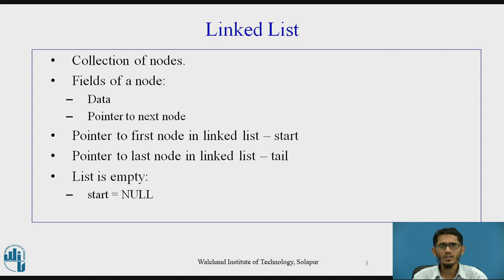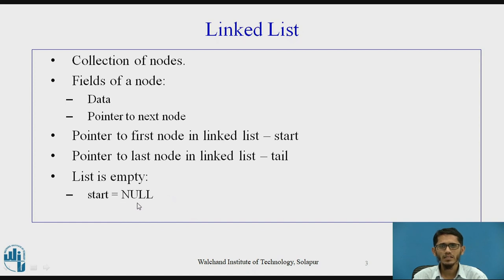We have two different types of pointers in a linked list. The pointer to the first node is called the start, and the pointer to the last node is called the tail. The tail pointer is optional, but we must have the start pointer so that other nodes can be reached. When the list is initially empty, the start pointer points to null, indicating no nodes are present.